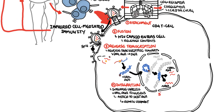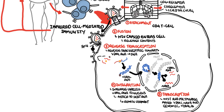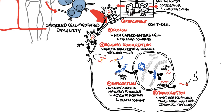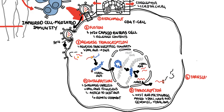The next step is transcription. When the cell becomes active, HIV uses the host enzyme RNA polymerase to read the HIV gene to make messenger RNA and genomic viral RNA. Focusing on the mRNA, the next step is translation. The messenger RNA provides the instructions for making new viral proteins, including structural proteins and the viral enzymes.